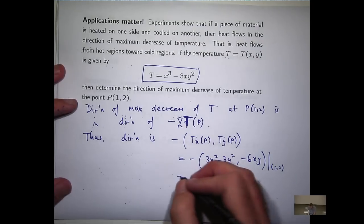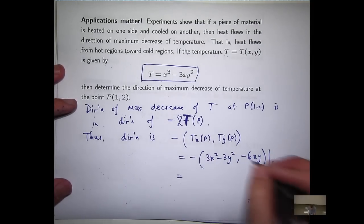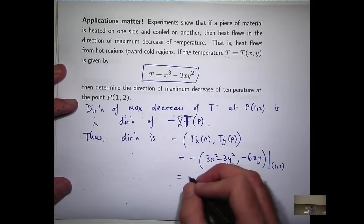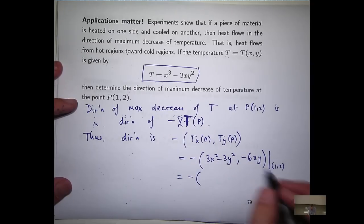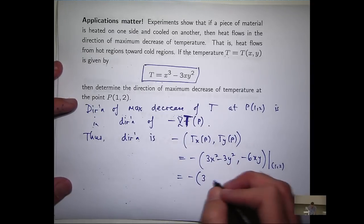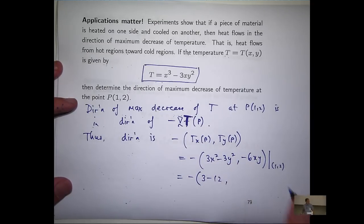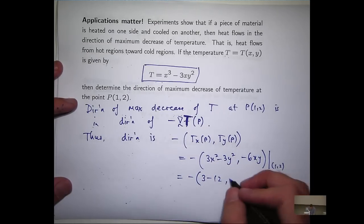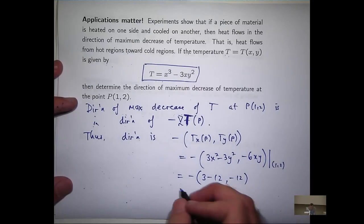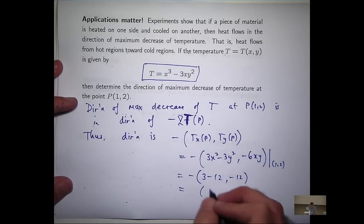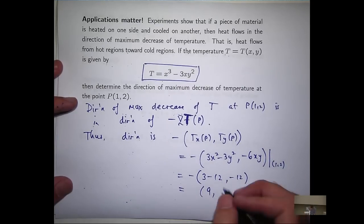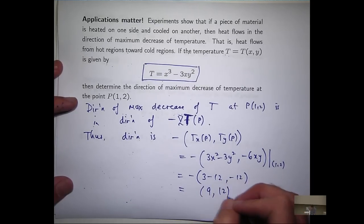So all we need to do now is sub in these numbers. So 3 minus 12, and we're going to get minus 12 in there, so that'll give us minus 9, 9, 12.